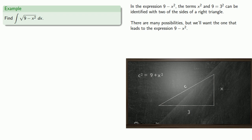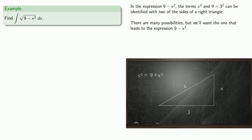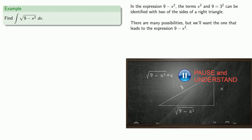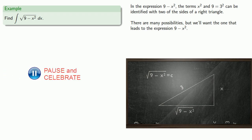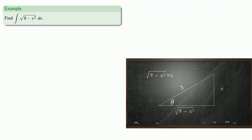If at first you don't succeed, try again — maybe changing where we put the 3. If we apply the Pythagorean theorem in a new configuration and do a little algebra, we do get the expression 9 minus x squared. Since we are interested in finding the trigonometric relationships, we'll need to designate an angle theta. Again, there are many trigonometric relationships we can use — we could find the sine, cosine, or tangent of theta.